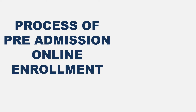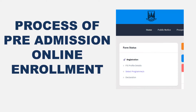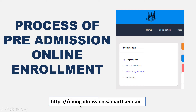Now I will explain the process for pre-admission online enrollment. You have to go to the university website — I have given you the link in the video description. You will visit the website directly. There you have to complete four steps: first, Registration; second, Fill the profile details; third, Selecting the program; and the last, Declaration. Let's complete it step by step.